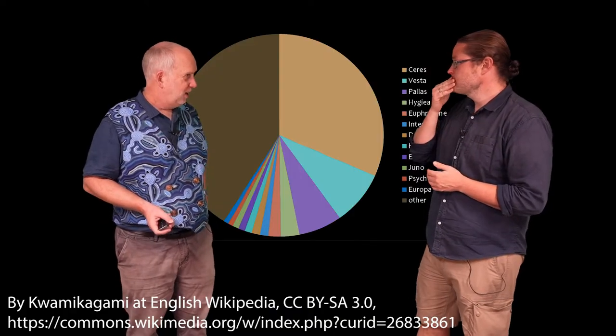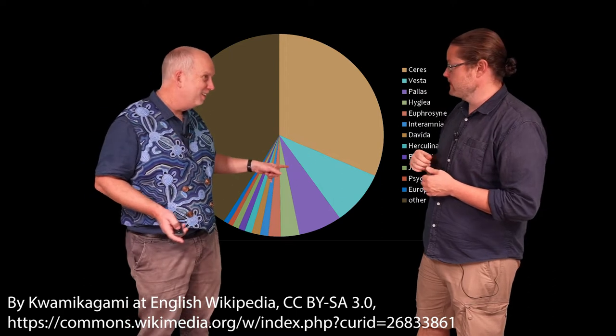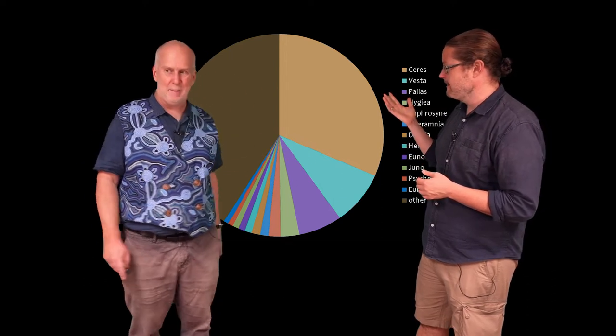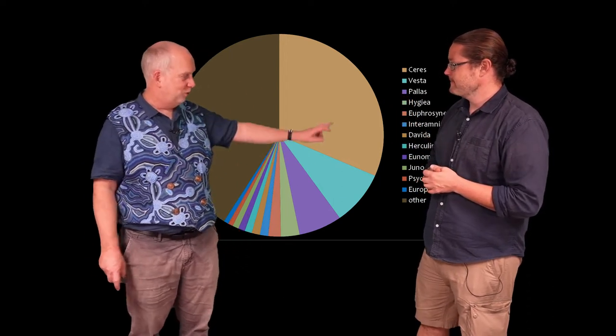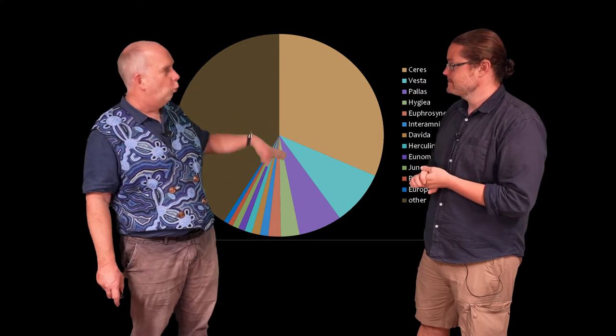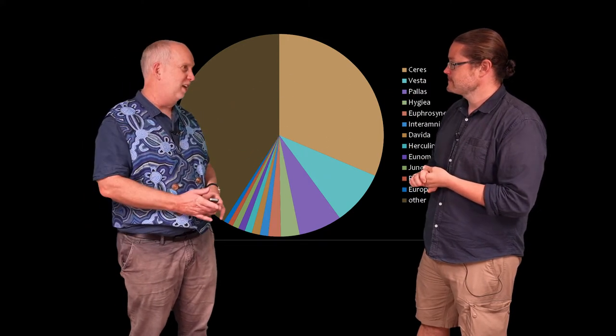That's right and if you look at the mass of these things it turns out that Ceres, which itself is pretty pathetic, is like a third of the entire mass of the asteroid belt and then you've got the other few of the big ones and then all the small ones.